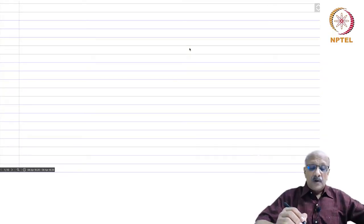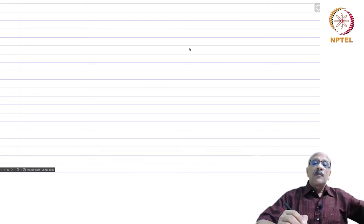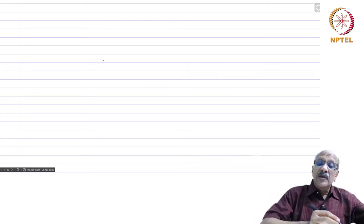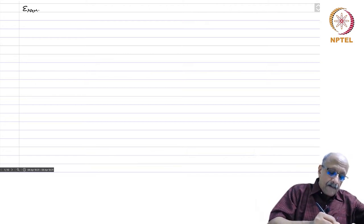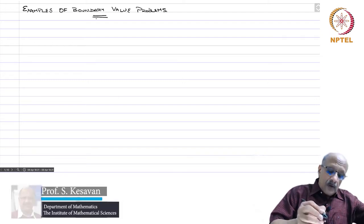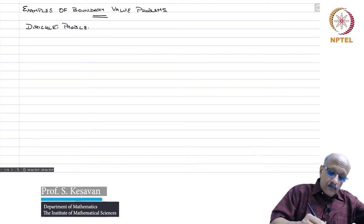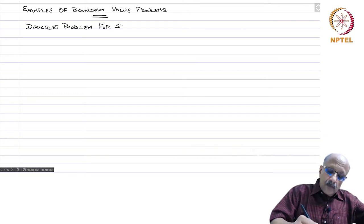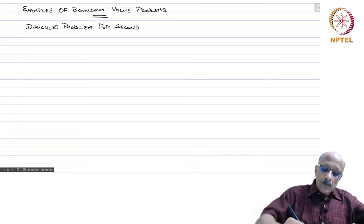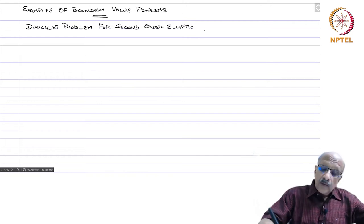We were looking at some abstract variational problems. Now we will see several examples of applications of the general result, especially the Lax-Milgram Lemma. So, examples of boundary value problems. We first look at the Dirichlet problem for second order elliptic operators.